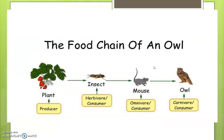The next point is top consumers. This is the food chain of an owl. Here, a plant is acting as a producer. Insects are dependent on this plant, and the mouse is dependent on the insect — these are herbivores. The mouse can be called an omnivore or consumer, and this owl is also a carnivore or top consumer.